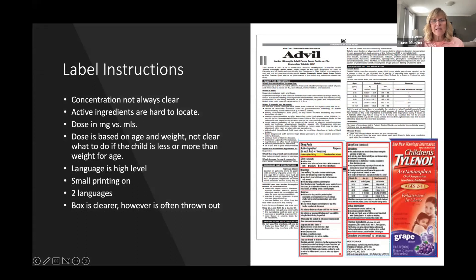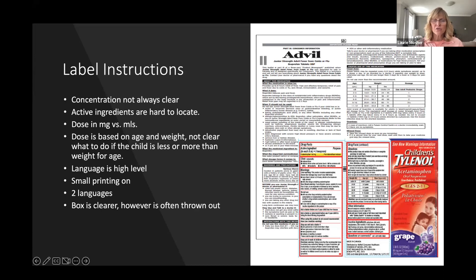Look at these labels — how confusing is that? When we get calls on the telephone, parents often have difficulty figuring out the concentration, whether it's 100 mg per 5 mL. The active ingredients are almost impossible to locate — parents say it's not there, and we have to walk people through the label. Dosing is based on age and weight, but what do you do if the child is smaller or bigger for their age? The language is high-level, the print is small — especially if you're in your 40s or above — and there's English, French, and information about non-medicinal ingredients. The information on the box is clear, but it's often thrown out.